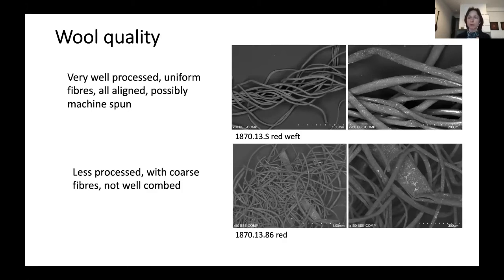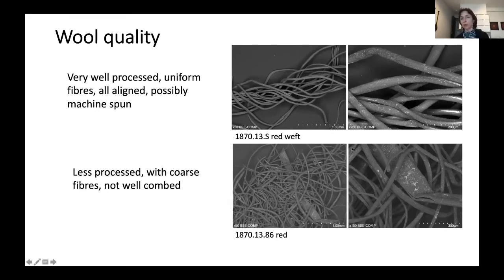We can also do something called wool quality analysis, which allows us to see differences in the type of sheep used to procure the fleece to make a textile. We have two groups: those weft-faced tabbies with very smooth, beautiful woolen threads that were clearly very well processed, very uniform and aligned — possibly machine spun — likely threads unraveled from cloth that arrived from European or Asian production centers and reused in African textiles. We also have much less uniform, less processed wool that is much more messy, possibly coming from further north, and spun in a different direction.